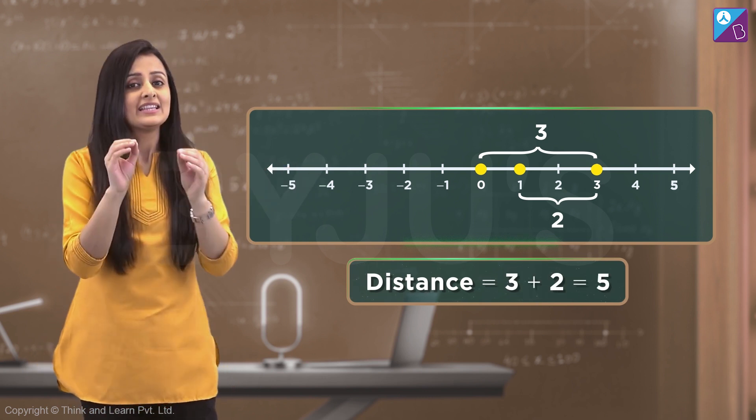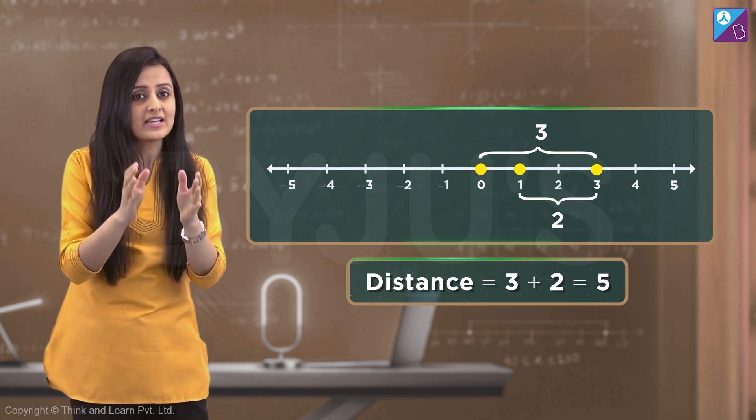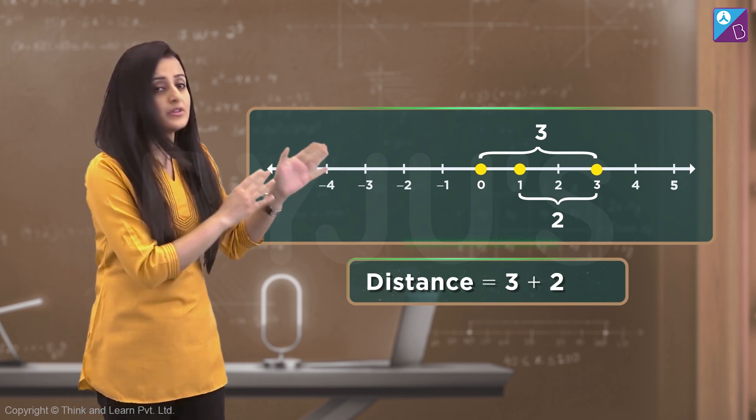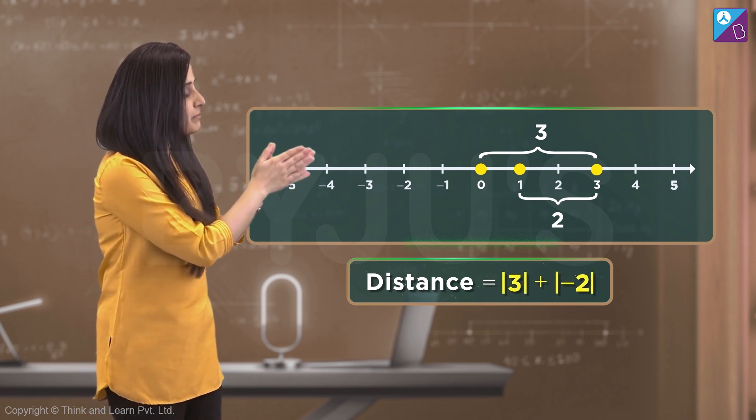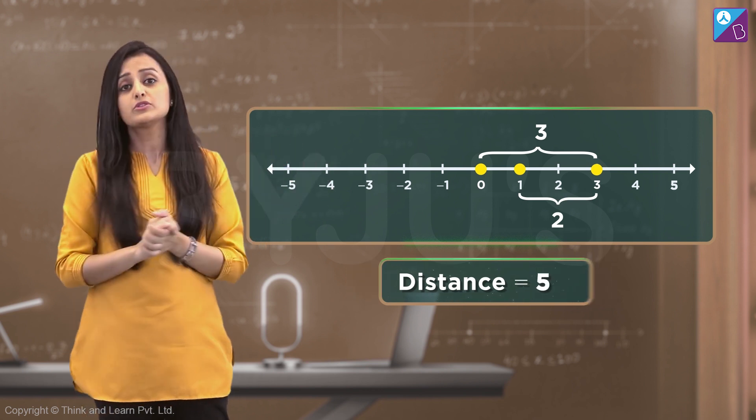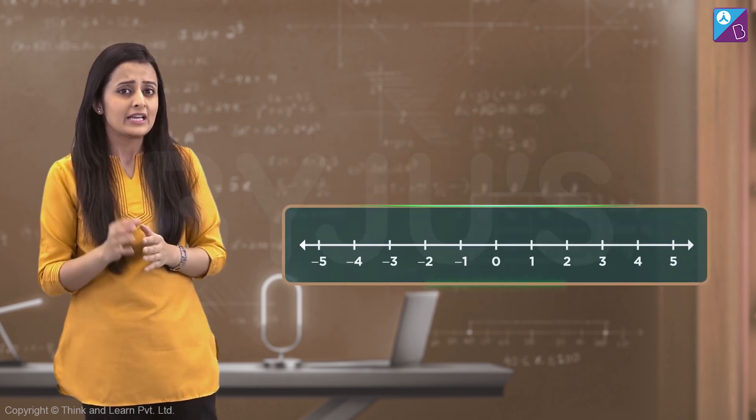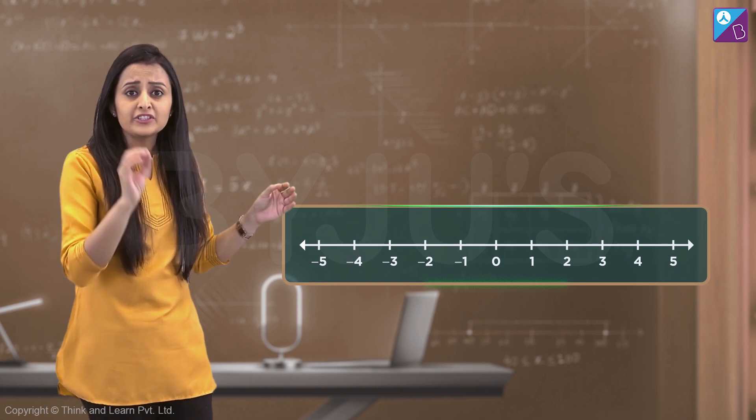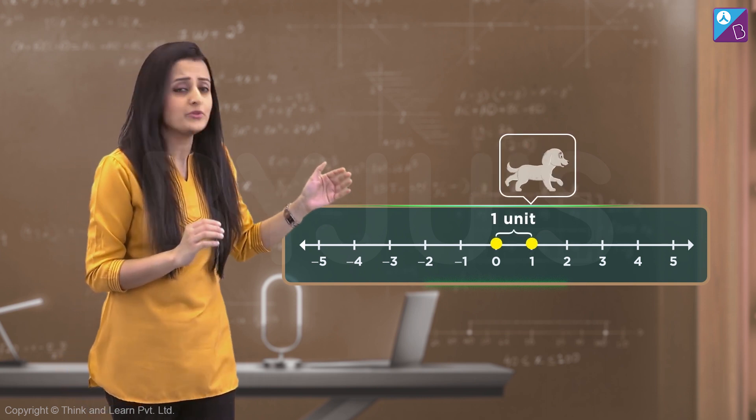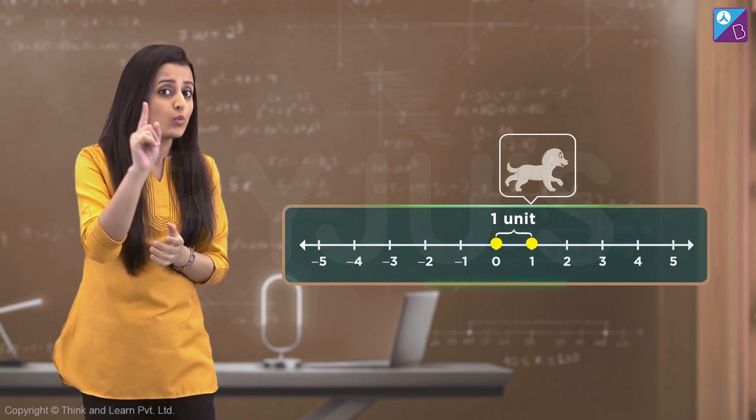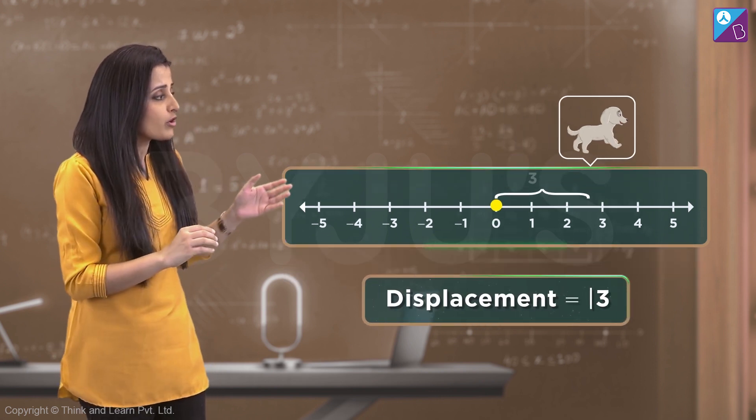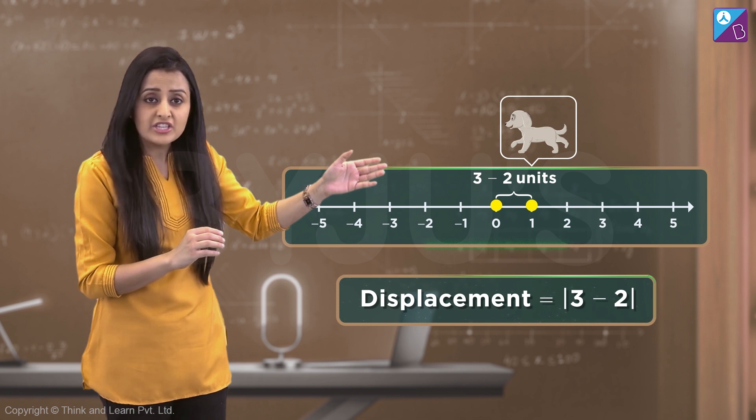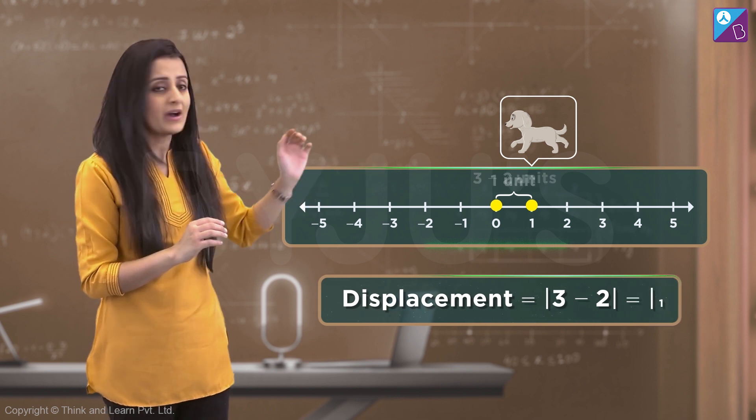And mathematically, this can be better represented by using modulus, which is mod of three plus mod of minus two, which is equal to five. But if we talk about the displacement, it is evident that it moves only one unit forward. It's one unit, which is calculated by modulus of three minus two, which is equal to mod of one, which gives us one.